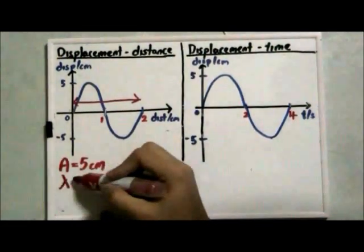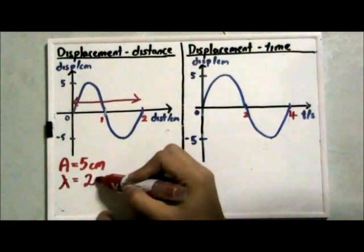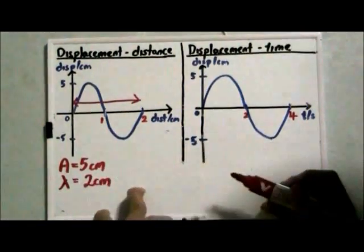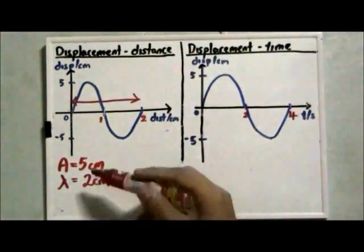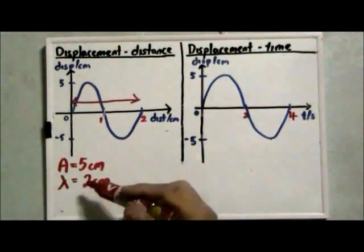So wavelength is equal to 2 cm in this case. Let me summarize. For a displacement-distance graph, we can find the amplitude as well as the wavelength.